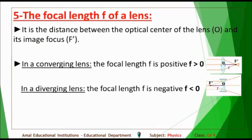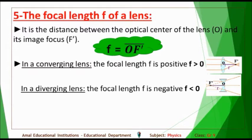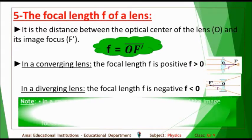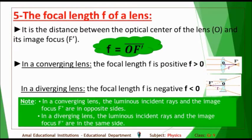The focal length F of a converging or diverging lens: in a converging lens, the focal length F is positive. In a diverging lens, the focal length F is negative. In a converging lens, the luminous incident rays and the image focus F prime are on opposite sides. In a diverging lens, the luminous incident rays and the image focus F prime are on the same side.